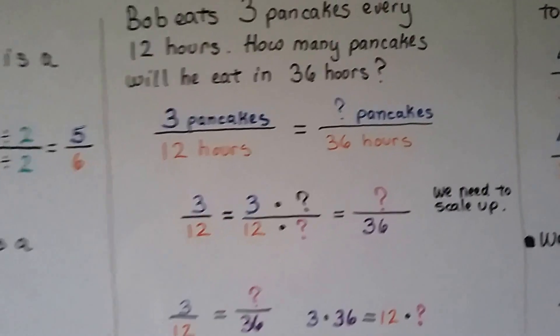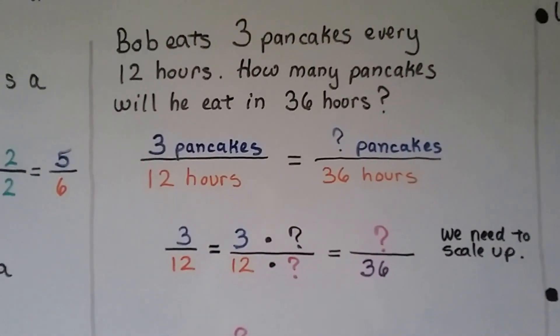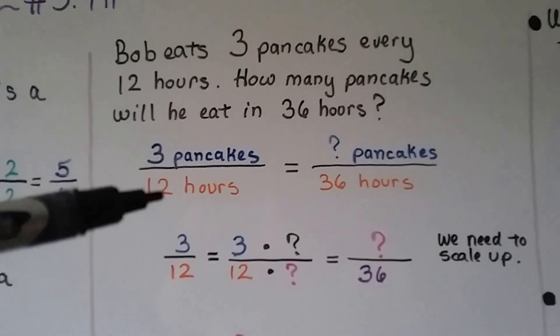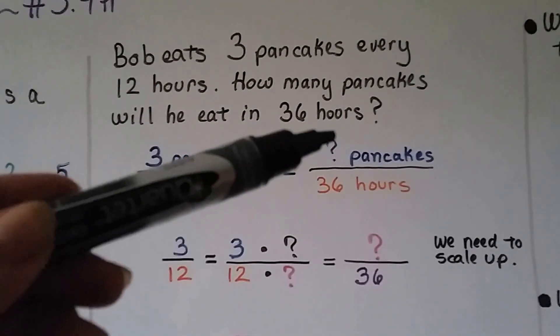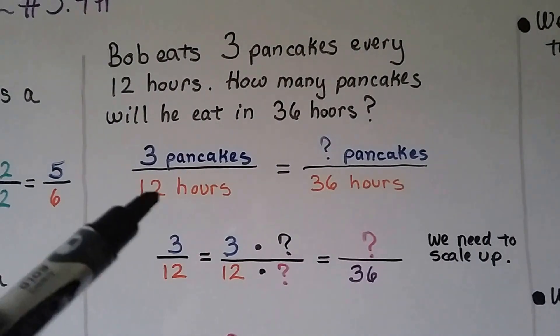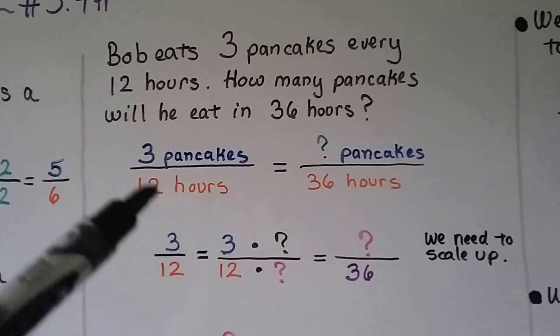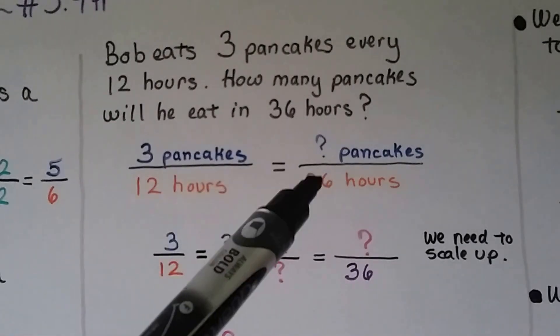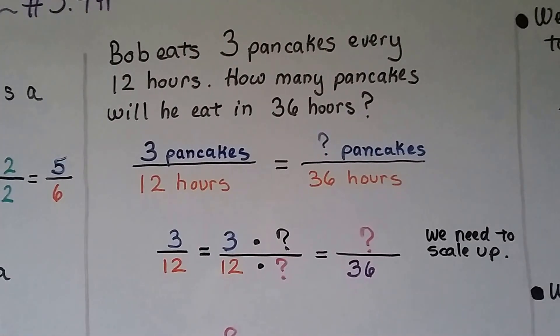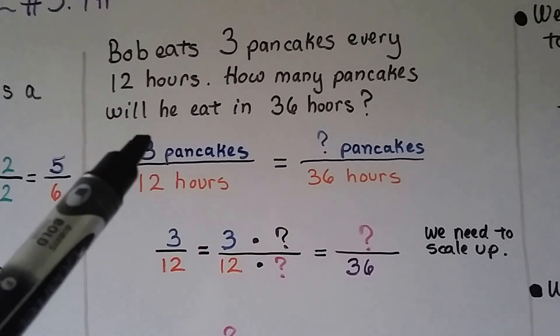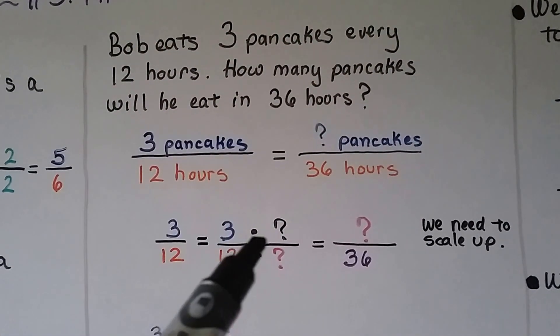Bob eats 3 pancakes every 12 hours. How many pancakes will he eat in 36 hours? So 3 pancakes in 12 hours is going to equal how many pancakes in 36 hours. We need to scale up because this is a bigger number. What's going to happen to 12 to become a 36? We're going to multiply it by 3.